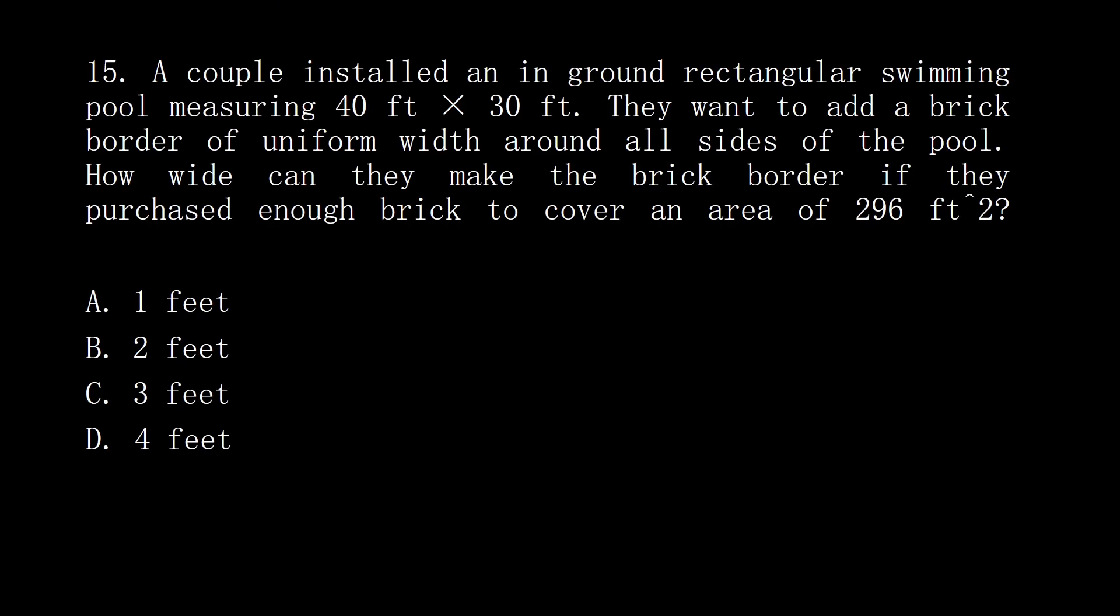Question 15: A couple installed an in-ground rectangular swimming pool measuring 40 ft × 30 ft. They want to add a brick border of uniform width around all sides of the pool. How wide can they make the brick border if they purchased enough brick to cover an area of 296 square feet?